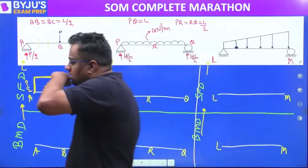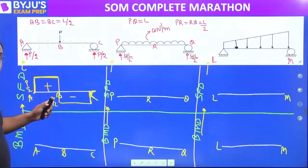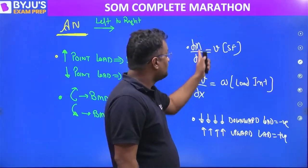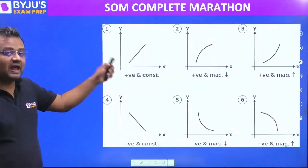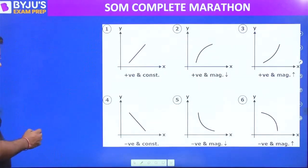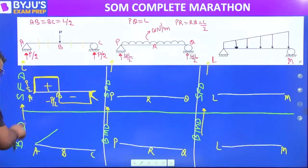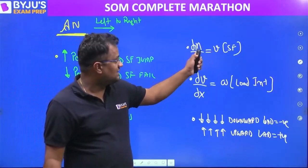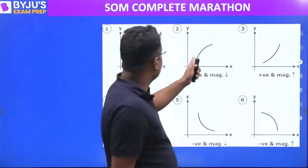Moving forward — from A to B, shear force is positive and constant. Bending moment slope equals shear force. Since shear force is positive and constant, the bending moment slope is positive and constant — that is graph number one. So while drawing the BMD we must look at the SFD.